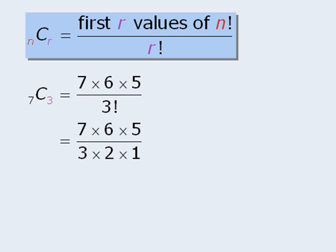Next we'll expand 3 factorial, and when we do this we can see that we can cancel the 6 in the numerator with this product in the denominator to get 7 times 5, which is equal to 35. So 3 objects can be selected from a group of 7 objects in 35 different ways.